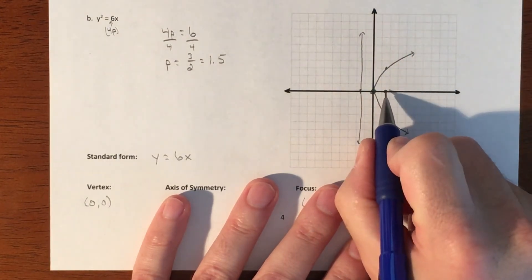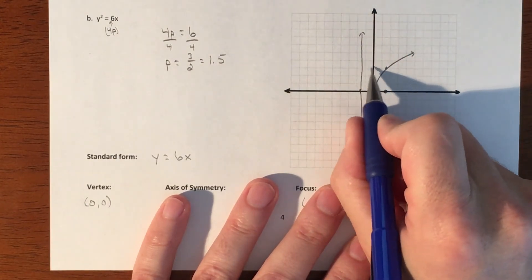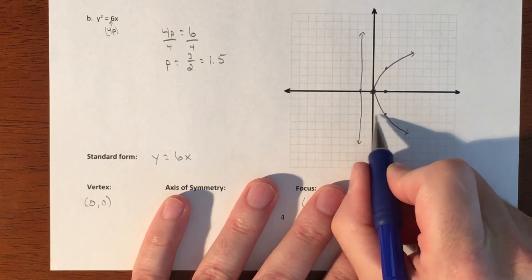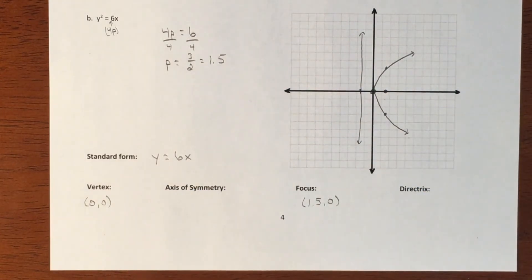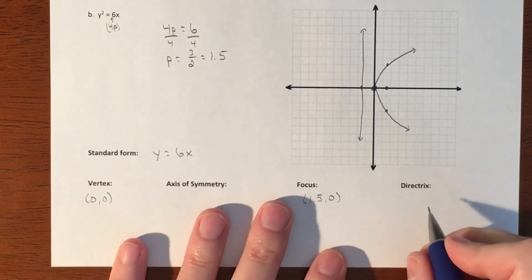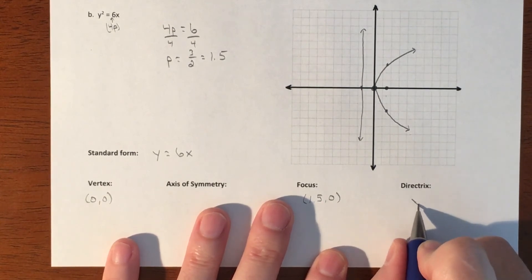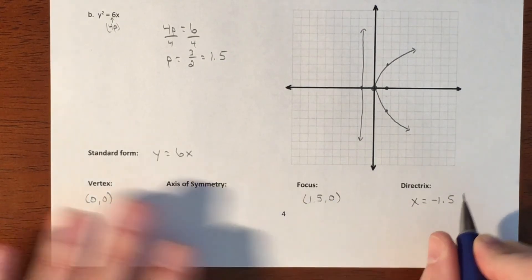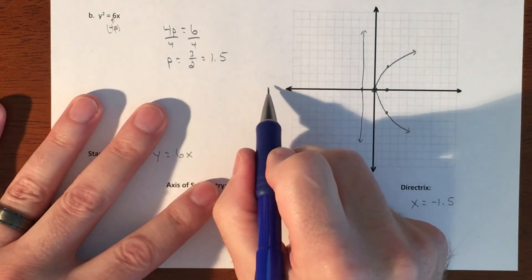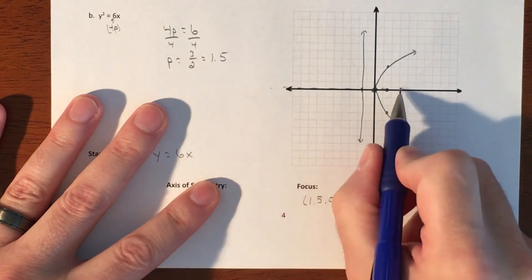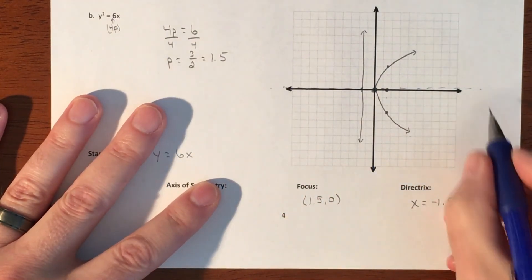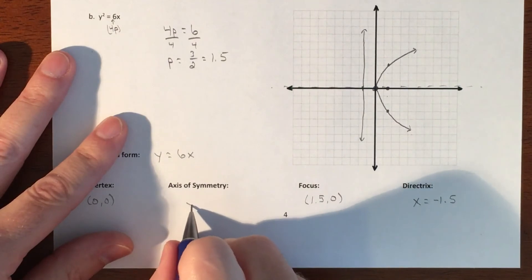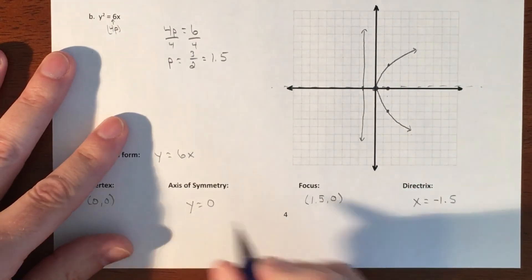Again, the idea is if this is three, then this should be three down to here. If that's three, then this should be three down to here. So our directrix, the equation of that is y equals, no, x equals, because it's a vertical line, x equals negative 1.5. And then our axis of symmetry, just kind of cutting through the middle here. And that is just going to be a y equals zero.